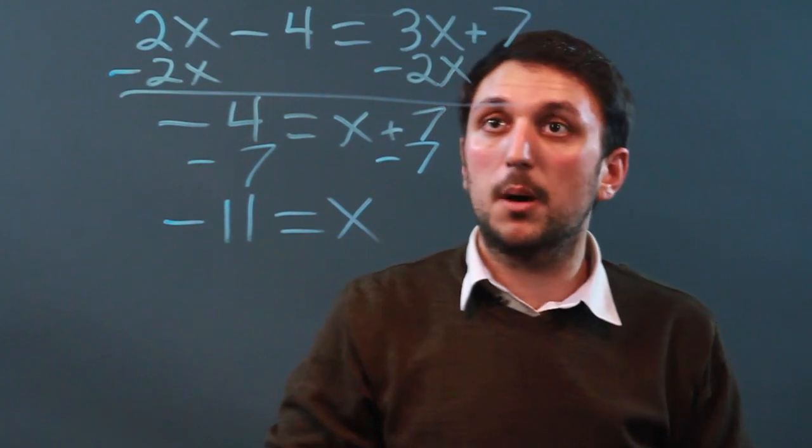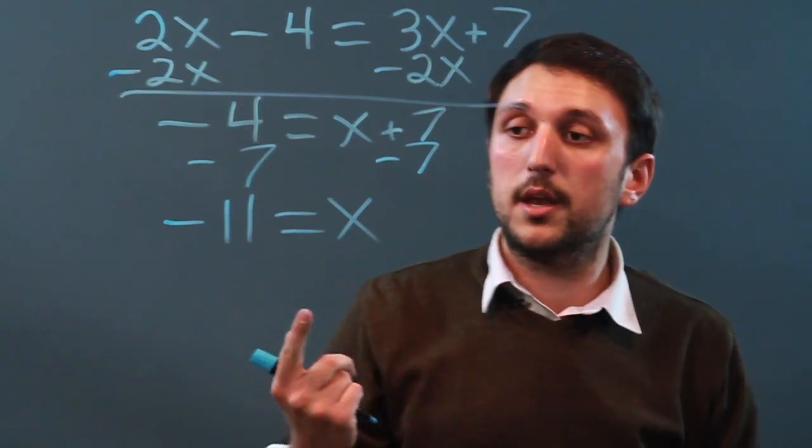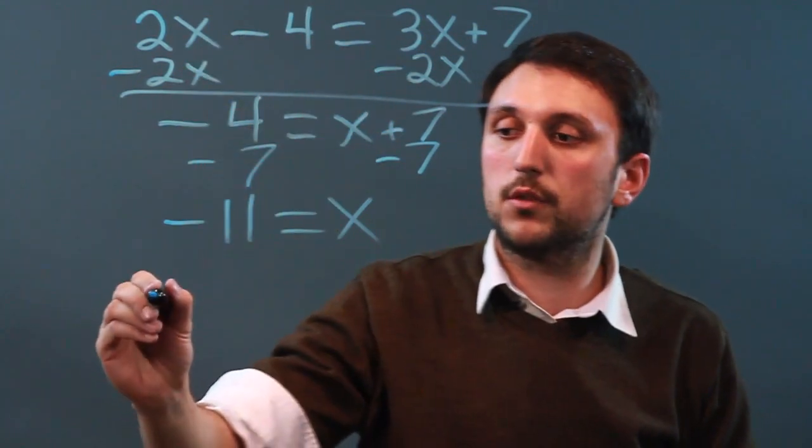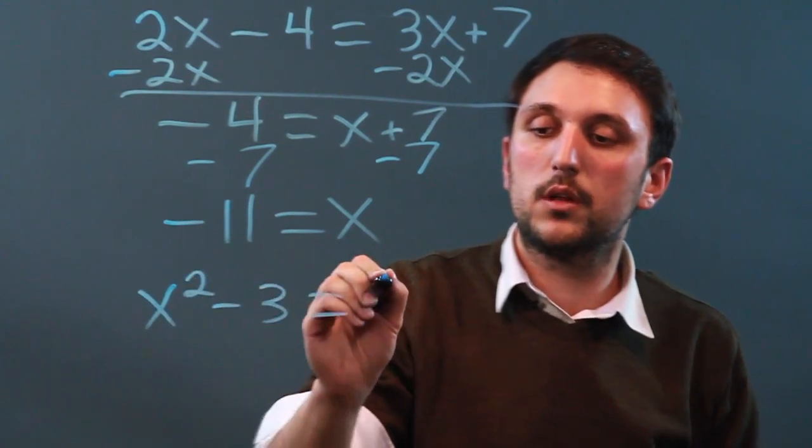And that is a basic multi-step equation in grade 9. Now, if they were to add anything to it, like an exponent, you would still deal with it. So x squared minus 3 equals 6.